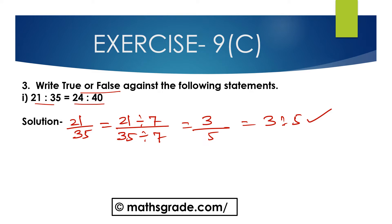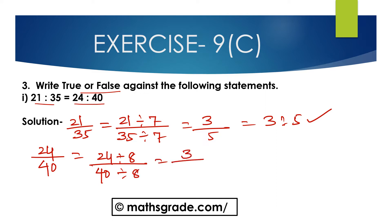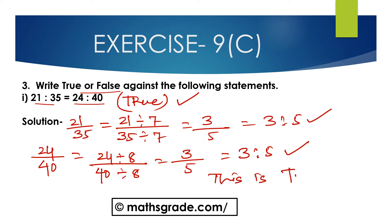Now, 24 is to 40 — that is 24 divided by 40. Between 24 and 40, 8 is the common factor. So divide the antecedent 24 by 8 and the consequent 40 by 8. 24 divided by 8 is 3, and 40 divided by 8 is 5. That is 3 is to 5. Both are equal: 3 is to 5 equals 3 is to 5. So 21 is to 35 equal to 24 is to 40 is TRUE.